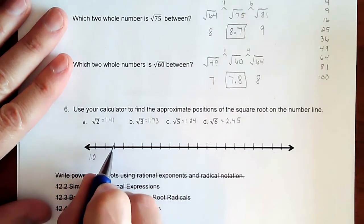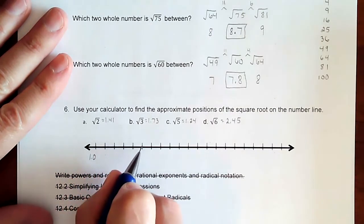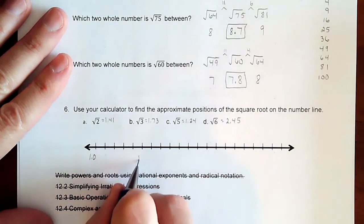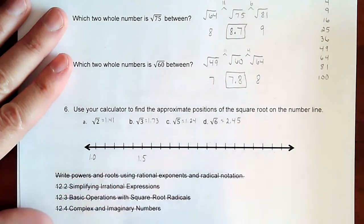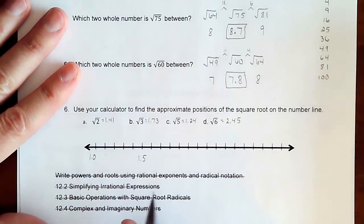So all of these spots after are going to go by 0.1. So like 1.1, 1.2, 1.3, 1.4, 1.5. And I'm only going to write out the 1.5. Otherwise it gets a little too busy if I write out all the ones in between.